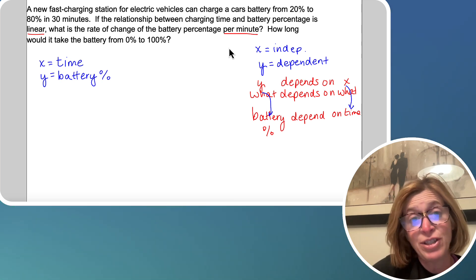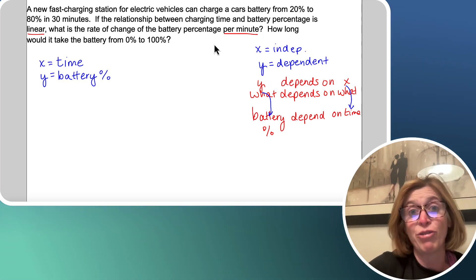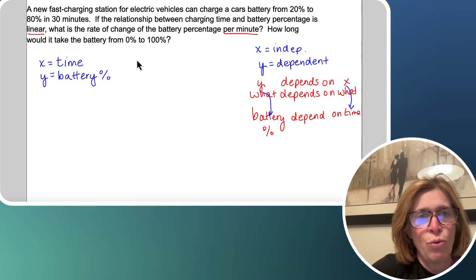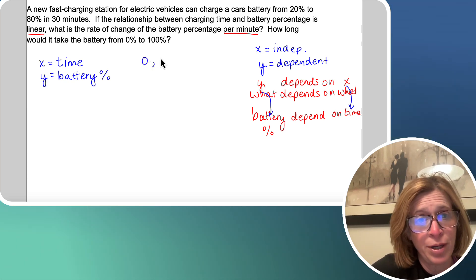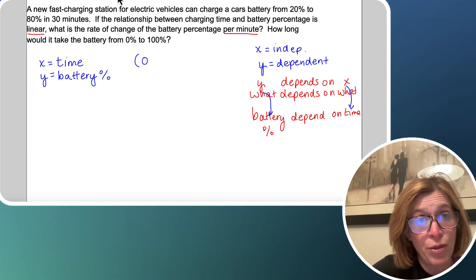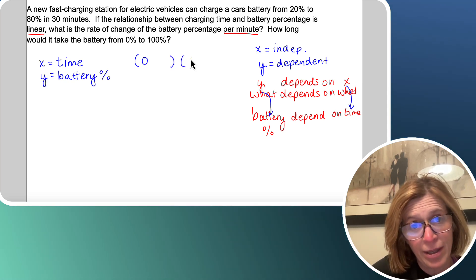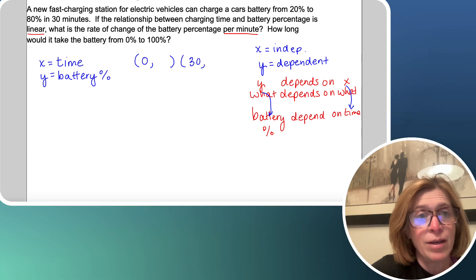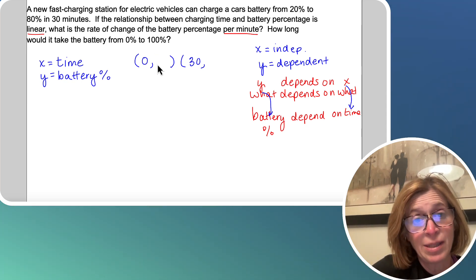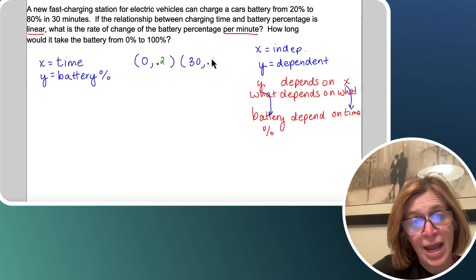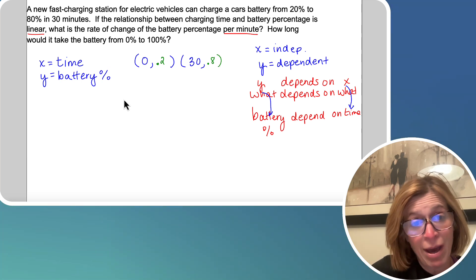So now I have to turn the data I have into points, so I can actually calculate the slope. So time, I start at zero minutes, and I go to 30 minutes. So my X's would be zero and 30. And then my battery percent is 20% and 80%. We'd want to write those as decimals, so 0.2 and 0.8.